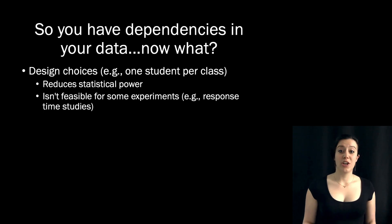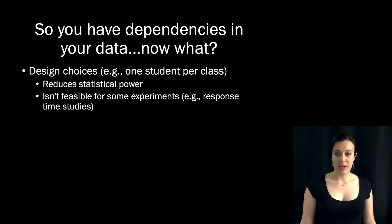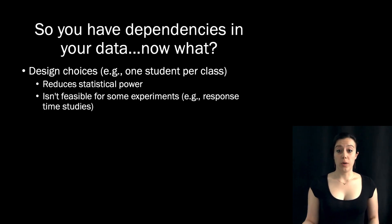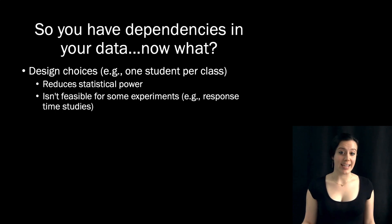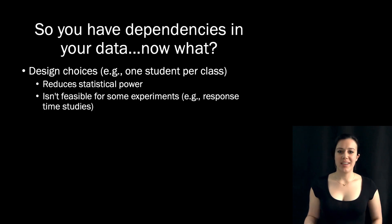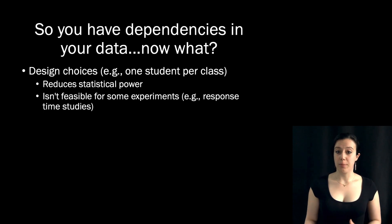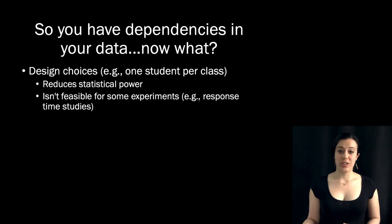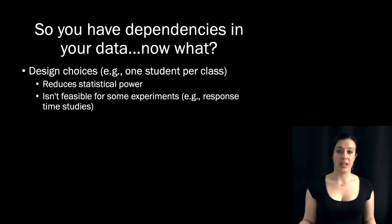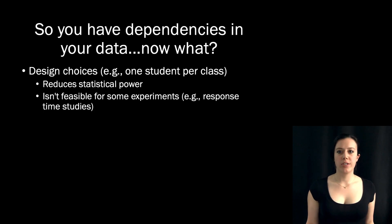It just doesn't make any sense. If you're conducting a study where response time is the outcome, it would be so silly to have a participant come in, press a button once, get paid two cents for their time, and be on their way. So you should always carefully consider design choices before conducting any experiment and before doing any stats. But in most cases, those dependencies are there for a reason — the type of research you do means you collect multiple observations from some grouping factor, like classes or participants. So any design choices you make to try to make those observations independent would be ill-advised.